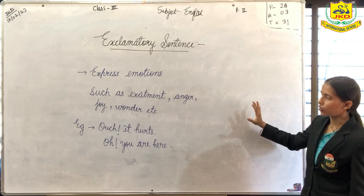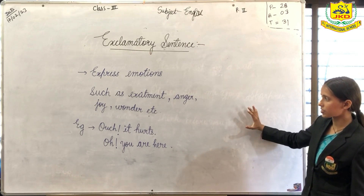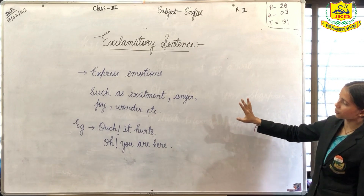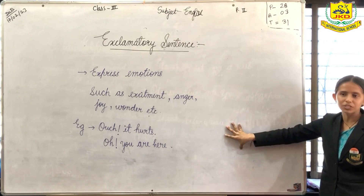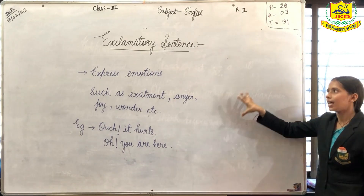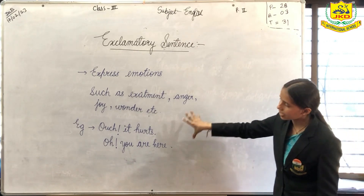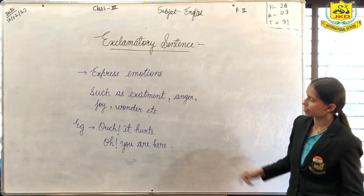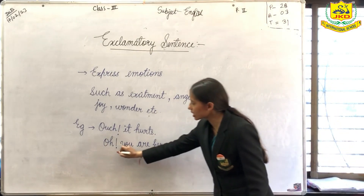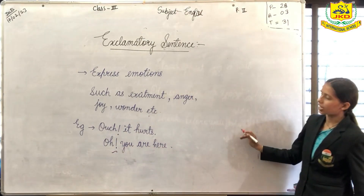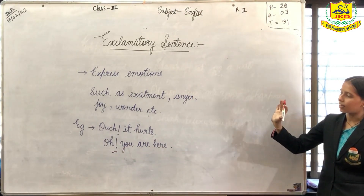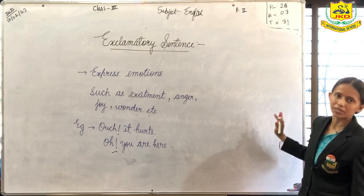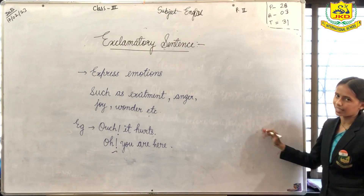And if you want to know which type of sentence it is, then you can always look for the exclamation mark. Exclamatory sentences always have an exclamation mark in them. This mark is known as the exclamation mark. So whenever there is an exclamation mark, then you must know that it is an exclamatory sentence.